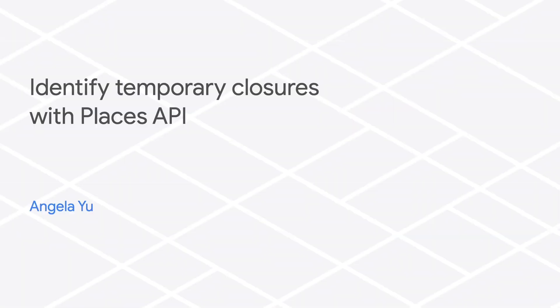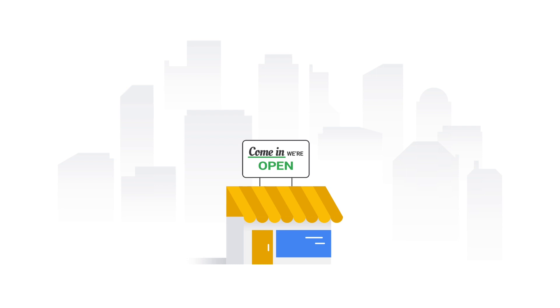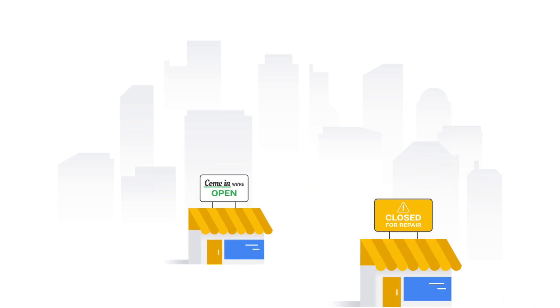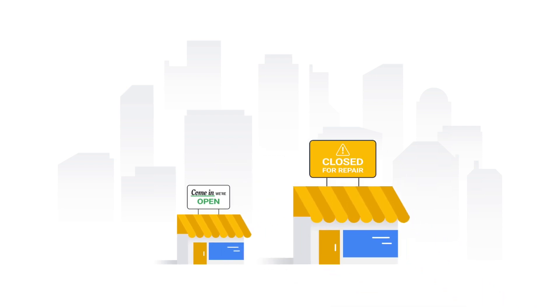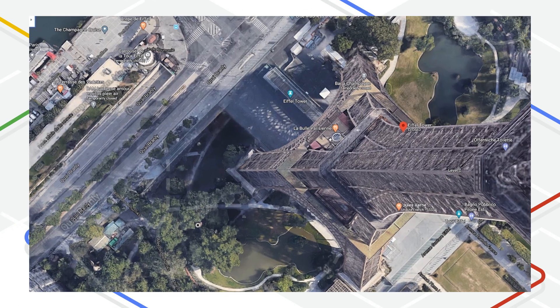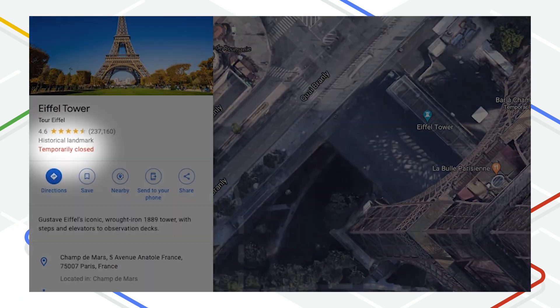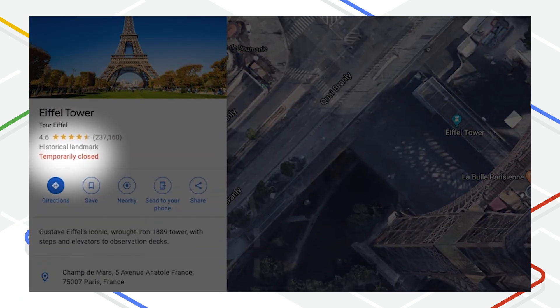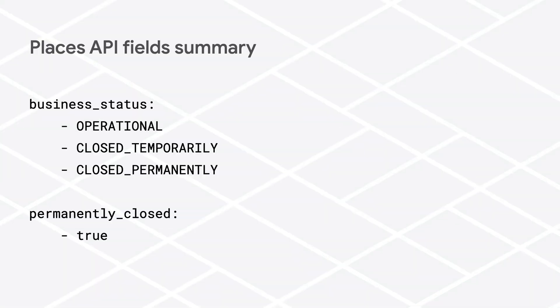If you want your app to distinguish between establishments that are open for business and establishments that are temporarily or permanently closed, the Places API has a field called Business Status that can help you do that. This video will tell you about our new field, Business Status, that represents the state of an establishment.